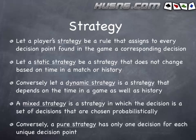A mixed strategy is one in which the decision is chosen probabilistically. For example, if we have the choice to min-raise or limp, a mixed strategy would let us limp 50% of the time and min-raise 50% of the time — we actually flip a coin or use a random number generator to decide. Conversely, a pure strategy has only one decision for each unique decision point. You can still open 50% of hands folding 50% — that's still pure. The difference comes down to specific hands: opening queen-two off 100% and folding jack-two off 100% is pure, but opening queen-two off 50% and folding it 50% would be part of a mixed strategy.